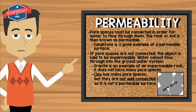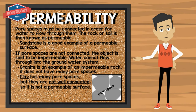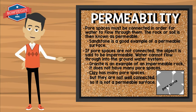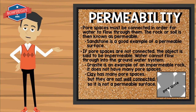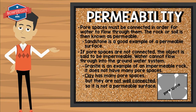Let's dive in deep within permeability. Pore spaces must be connected in order for water to flow throughout them — the rock or soil is then known as permeable. Sandstone is a great example of a permeable surface. If pore spaces are not connected, the object is said to be impermeable, and water cannot flow through the groundwater system. Granite is an example of an impermeable rock — it does not have many pore spaces. Clay has many pore spaces, but they are not well connected, so it is not a permeable surface.